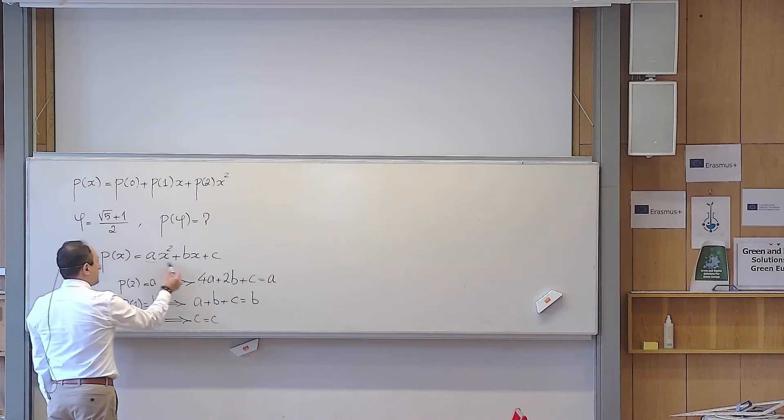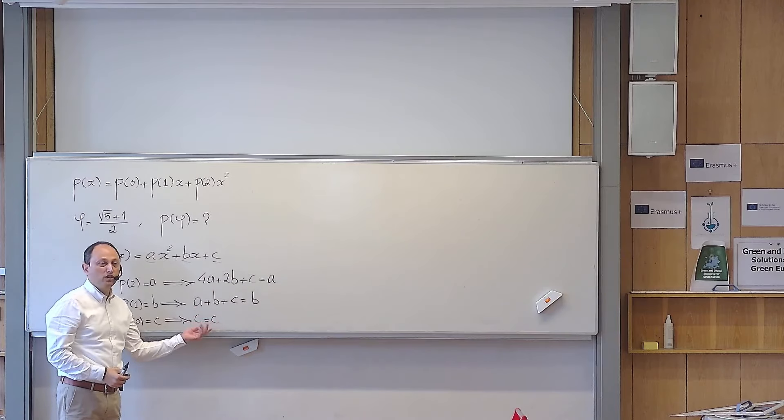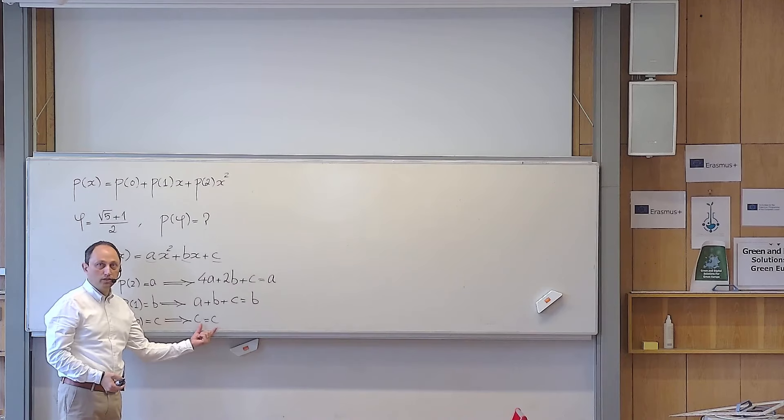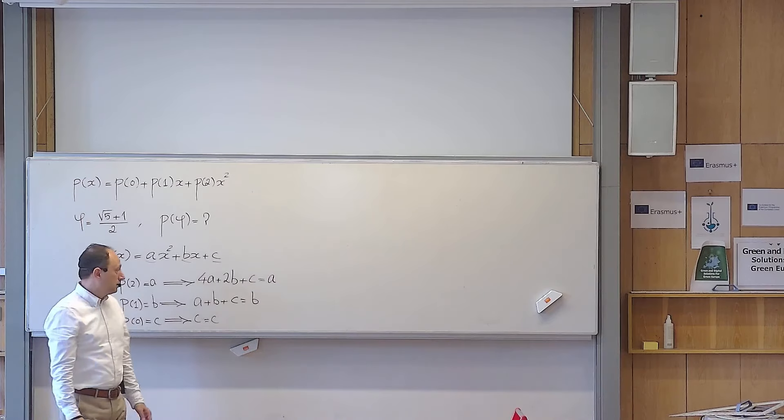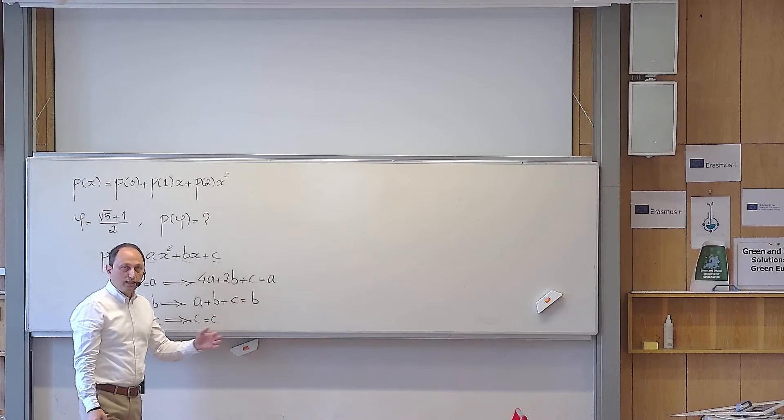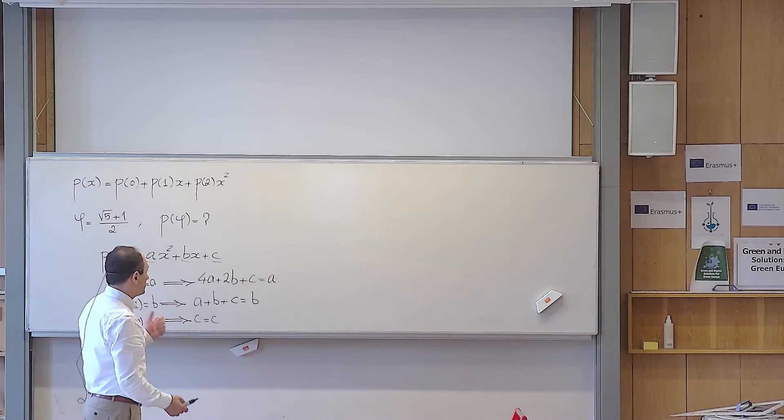So you might think that you are a little bit in trouble because we have three unknowns. In principle, we have three equations, but one of them is useless because this is an evident piece of information. So we cannot rely on it. It doesn't give you any extra information, but we can rely on them. But then unfortunately you have only two equations in three unknowns. You might think that it is not possible to answer the question.